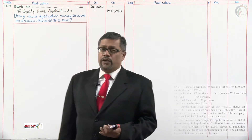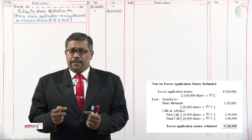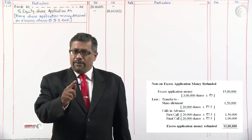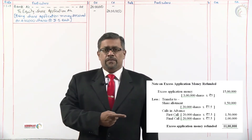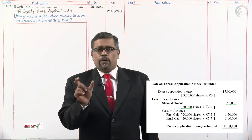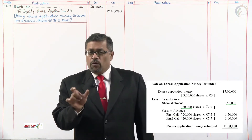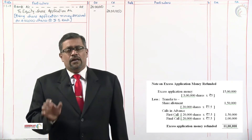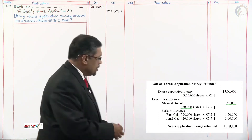As seen in the working note, the excess application money is adjusted: 1 lakh 50 towards allotment, and 2 lakh 50 towards calls in advance — that is 1 lakh 50 of the first call and 1 lakh of the second call. Let us see how to pass this journal entry.